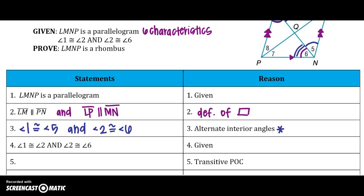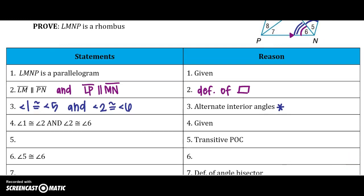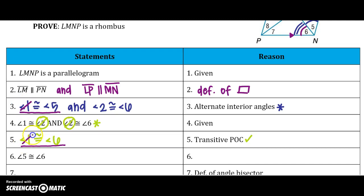That's about all I can use with those parallel lines. Going back to my given information: I know that angle 1 and angle 2 are congruent, and angle 2 and angle 6 are congruent. Because angle 2 connects the two, angle 1 is congruent to angle 6 by the transitive property. Then looking at angle 1 ≅ angle 5 and angle 1 ≅ angle 6, angle 1 is the connection piece, so angle 5 is congruent to angle 6 by the transitive property.